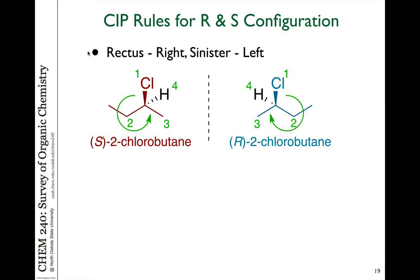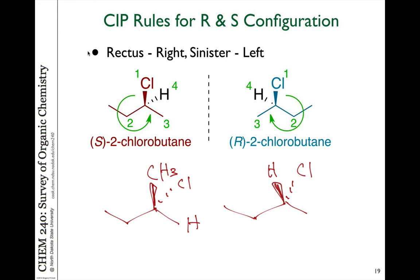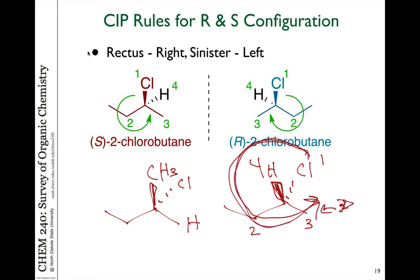Keep in mind I've drawn these in an ideal way so you can easily see the lowest group going away. But what would happen if the hydrogen is in the plane of the board, or if the hydrogen is up and the chlorine is down? We still have the same priority groups — one, two, three, and four. If you're going from one to two to three counterclockwise, but hydrogen is on the wrong side, you can either envision this from the backside, or simply flip it over in your mind and take the opposite. So if it's going counterclockwise with the lowest priority group coming towards us, it would be the R isomer, not the S isomer.